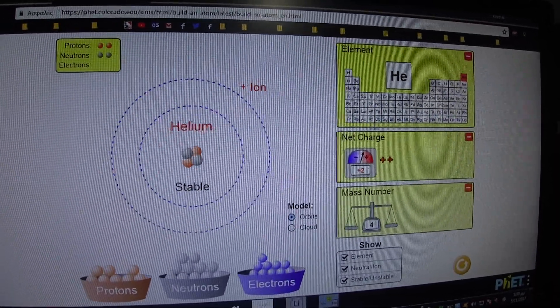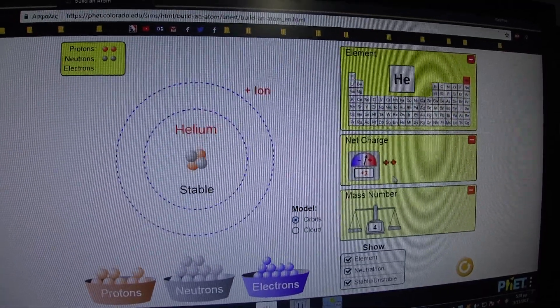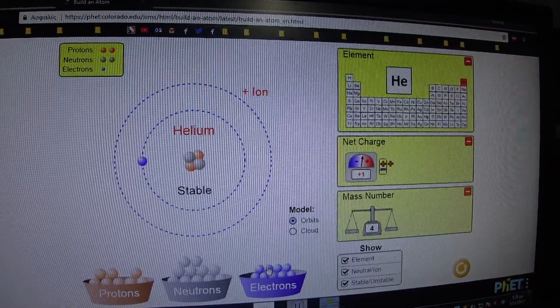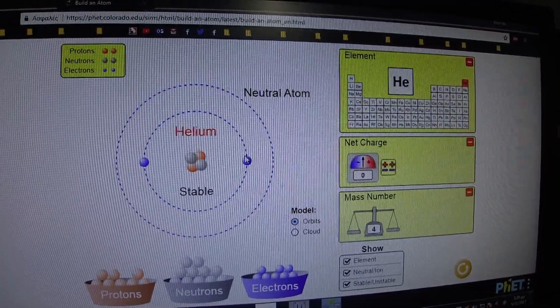But as we can see, we have a positive charge. So we need two electrons, which are opposite with each other. And now we have a neutral atom with a mass number of 4.